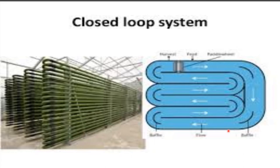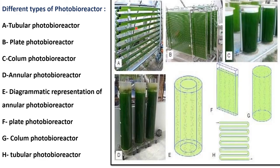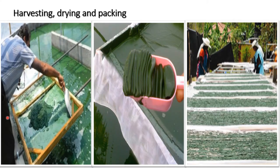The closed system permits higher cell concentrations, thus reducing operation costs and attaining higher productivity. Examples include Dunaliella bardawil and Rhodella reticulata. Different types of photo bioreactors are: tubular photo bioreactor, plate photo bioreactor, column photo bioreactor, and annular photo bioreactor.